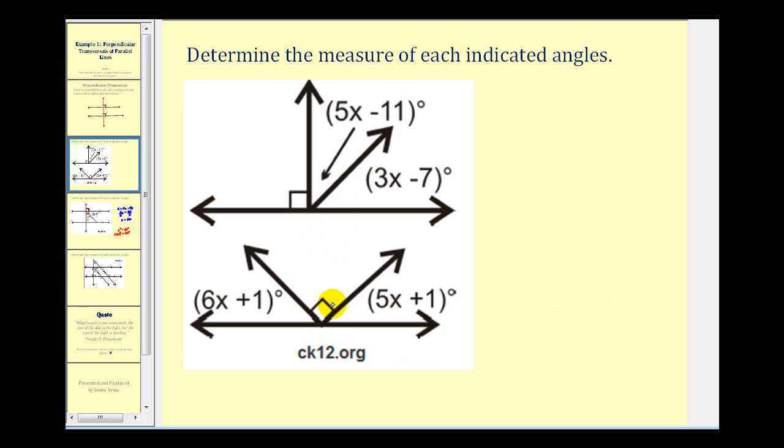Here we have two figures. We want to determine the measure of the missing angles. Looking at this first figure, this ray here is perpendicular to the line. And therefore, we have a right angle on the left and on the right, which means both of these angles have a measure of 90 degrees. So the sum of these two angles would be 90 degrees, or these two angles would be complementary.